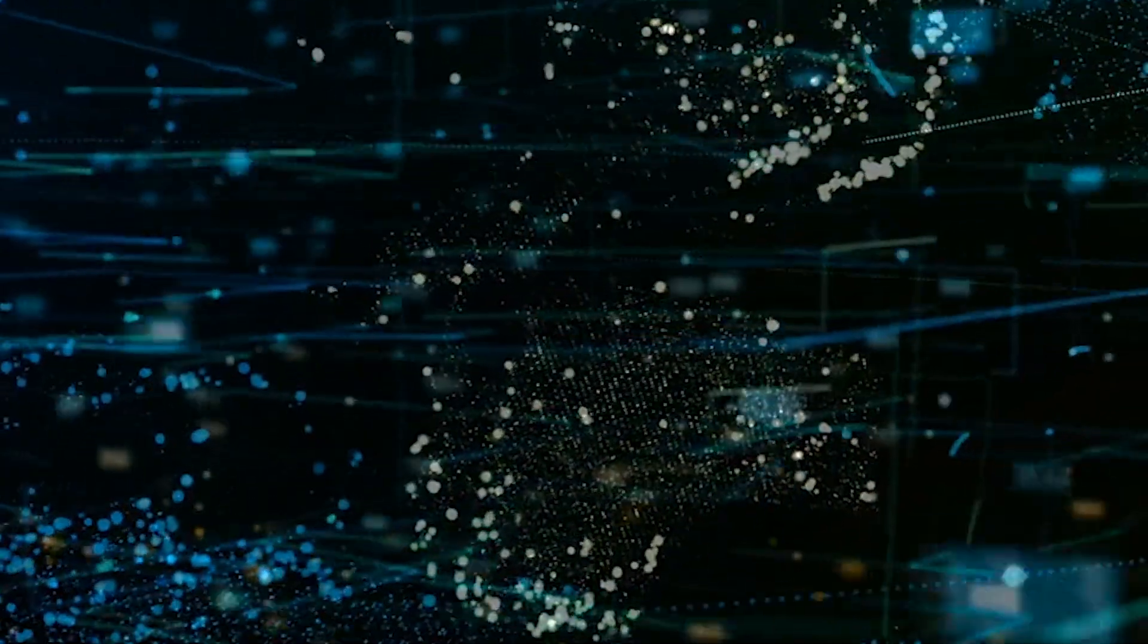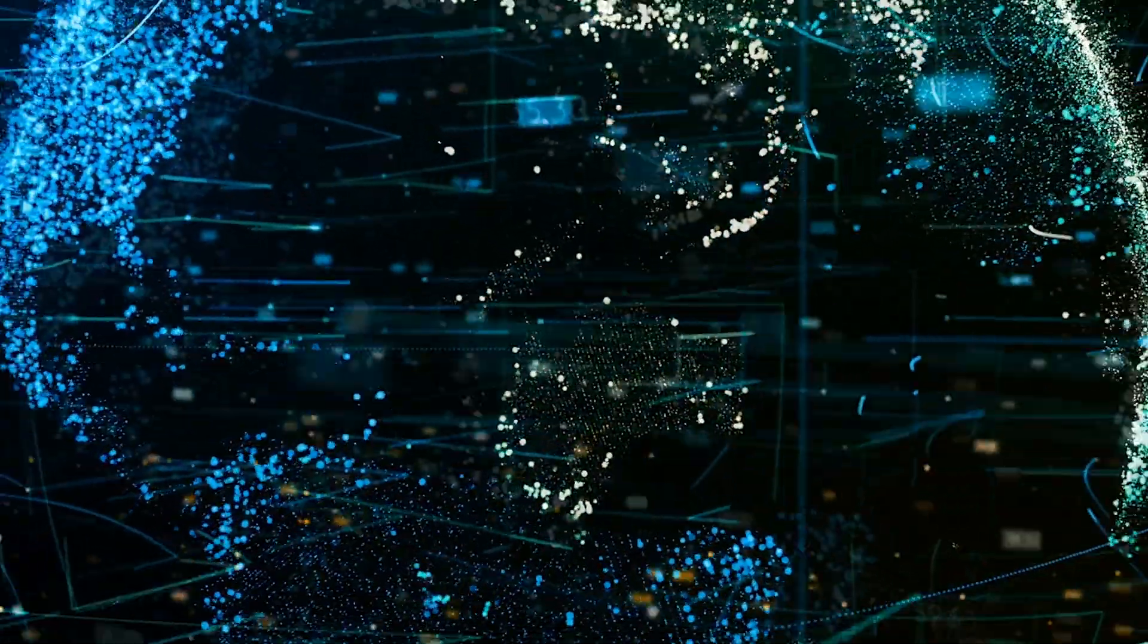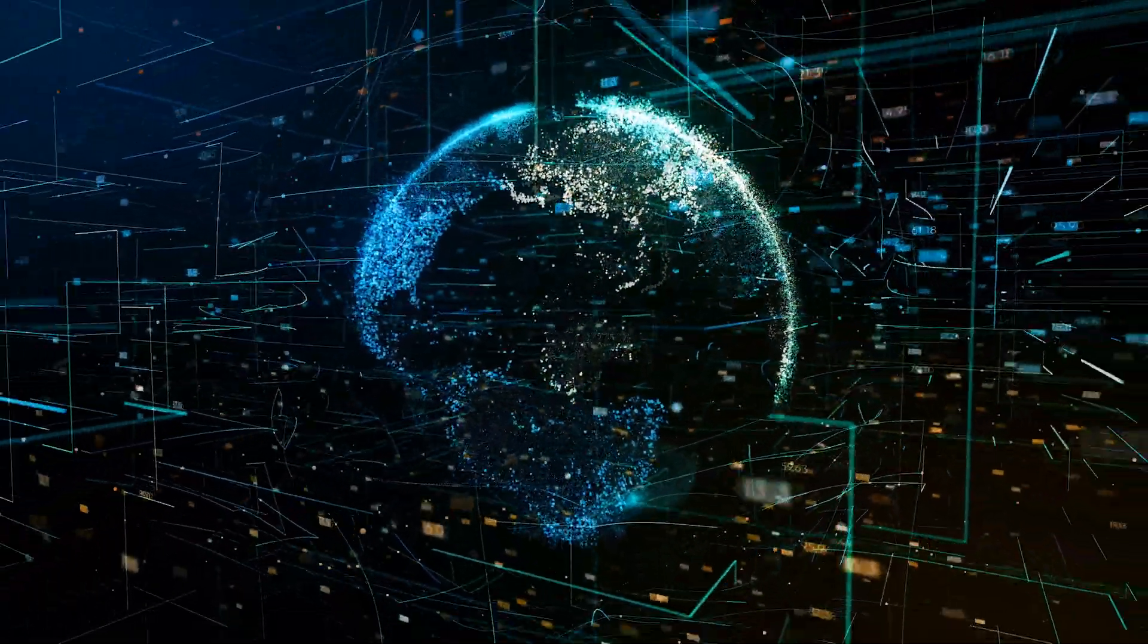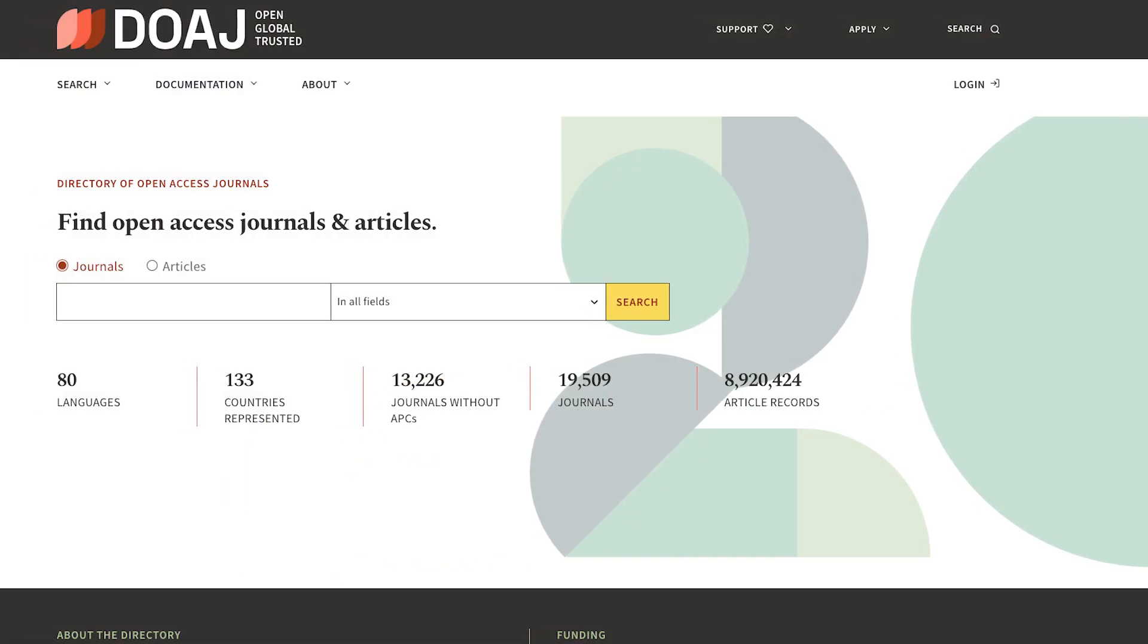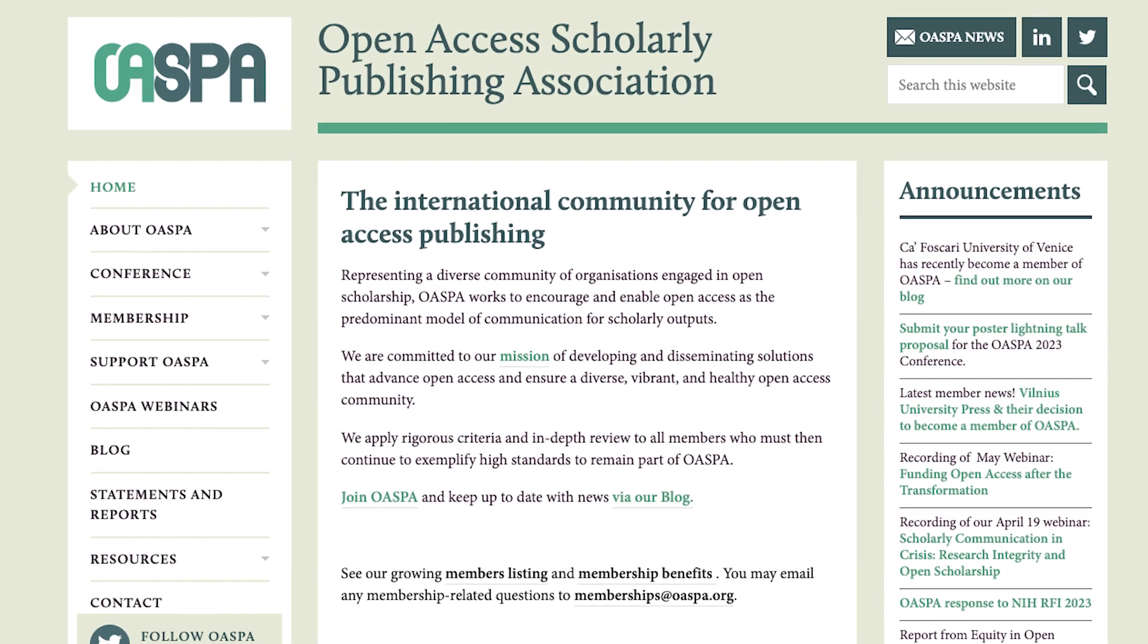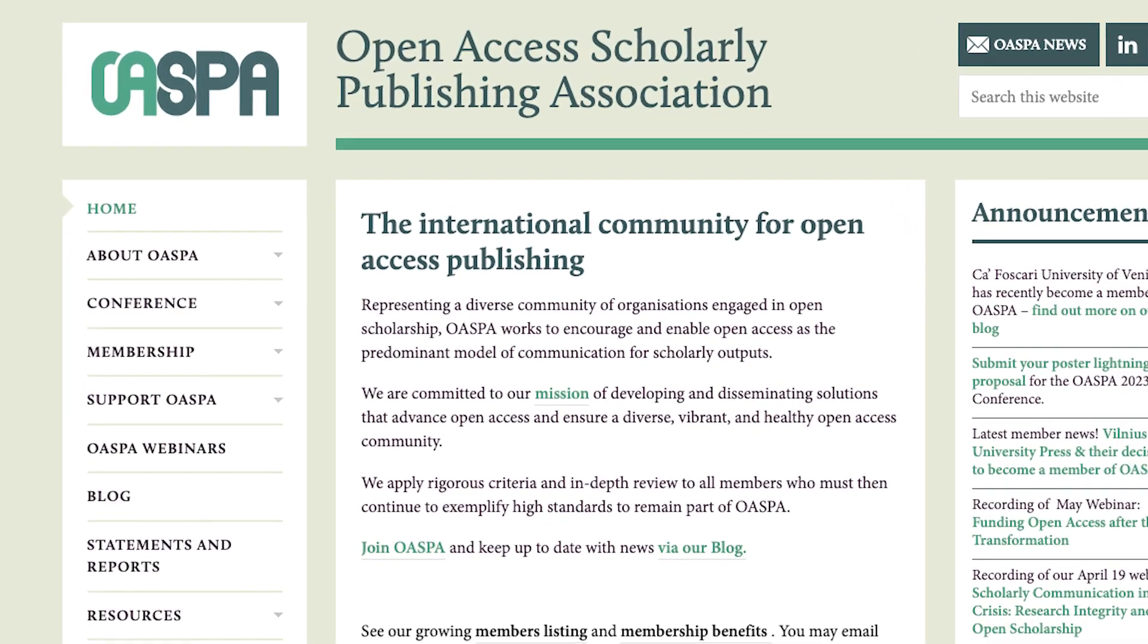To ensure credibility, check if the journal is affiliated with reputable organizations like the Committee on Publication Ethics, the Directory of Open Access Journals, or the Open Access Scholarly Publishers Association.